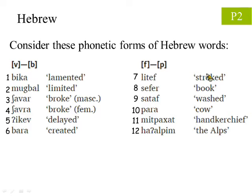Here are the words relevant to this topic, all in phonetic form, and the words in quotes are corresponding English meaning. The vocabularies in the left column focus on the sounds v and b, while those in the right column focus on the sounds f and p.